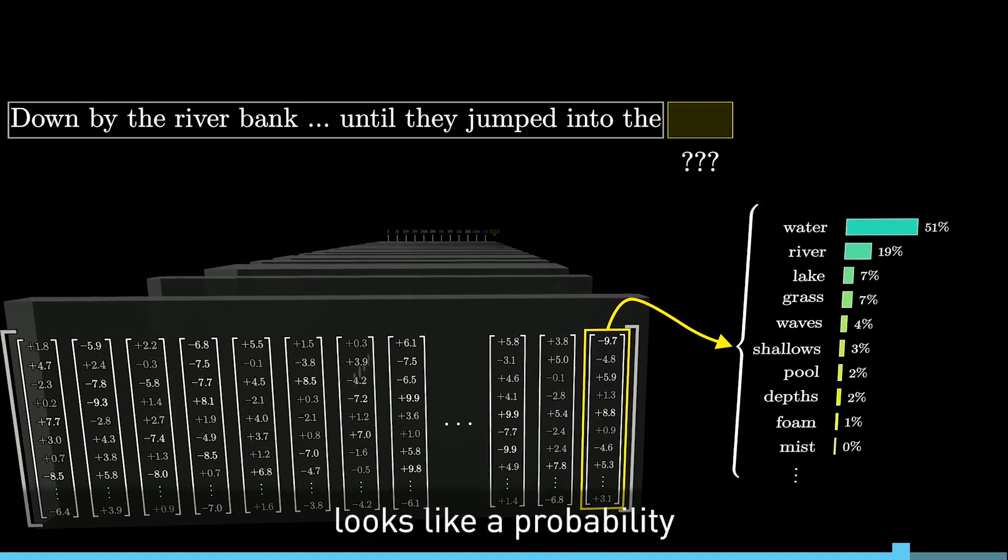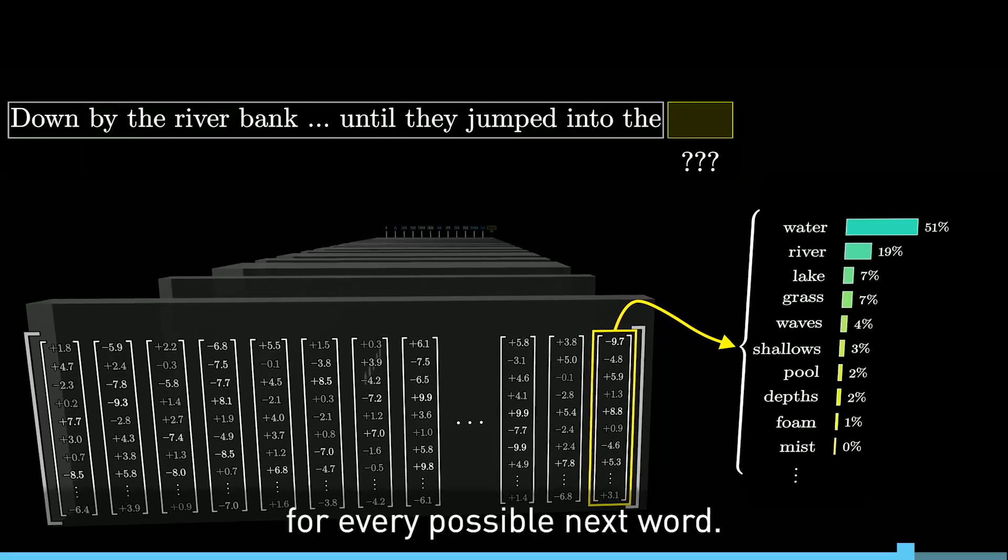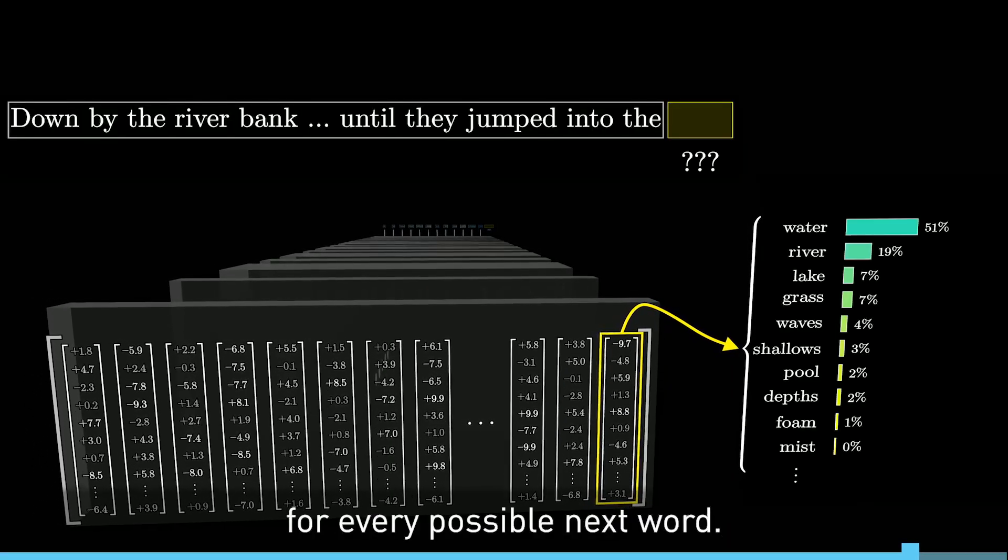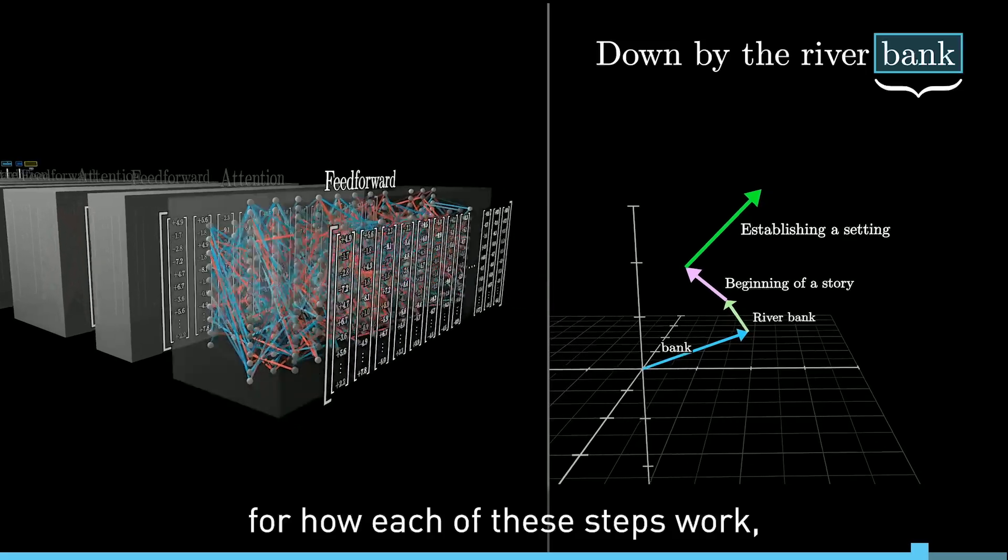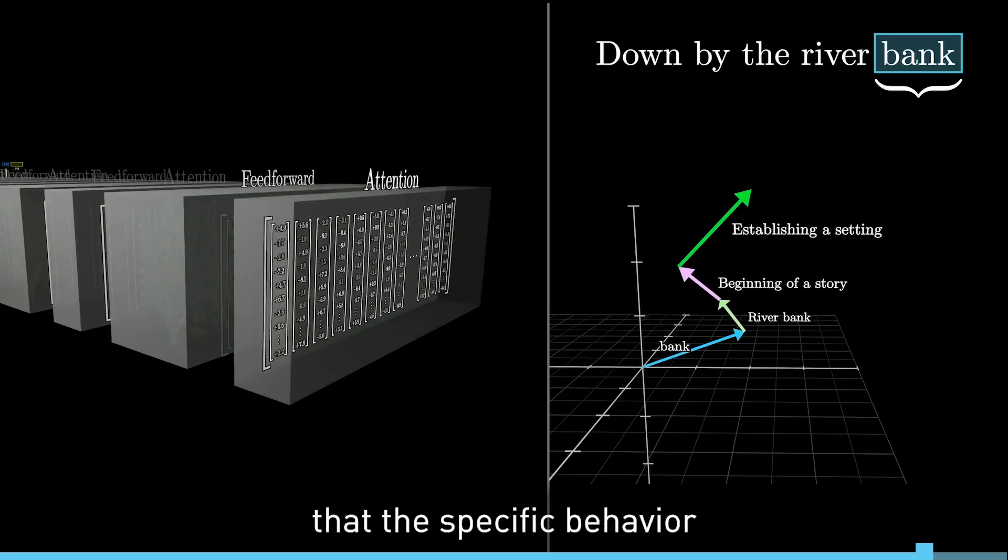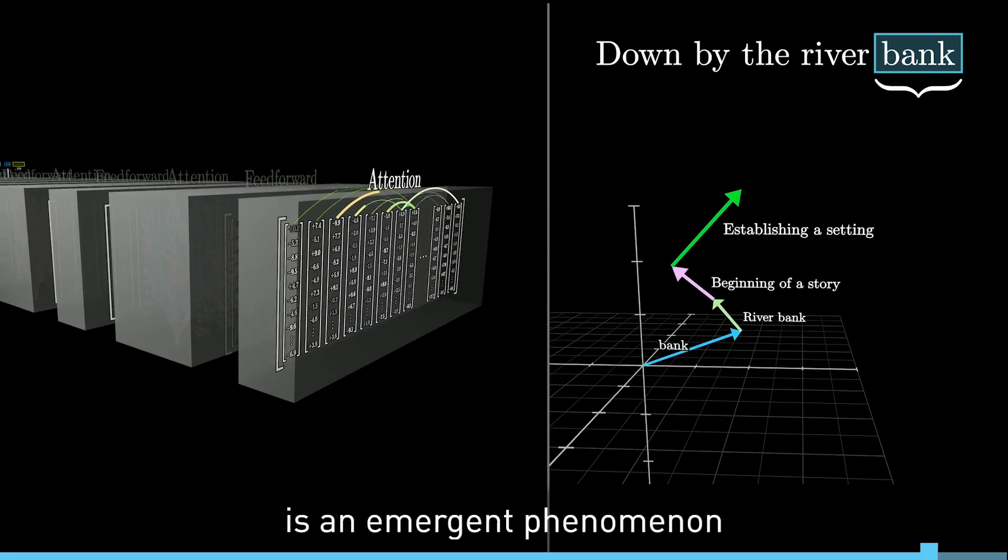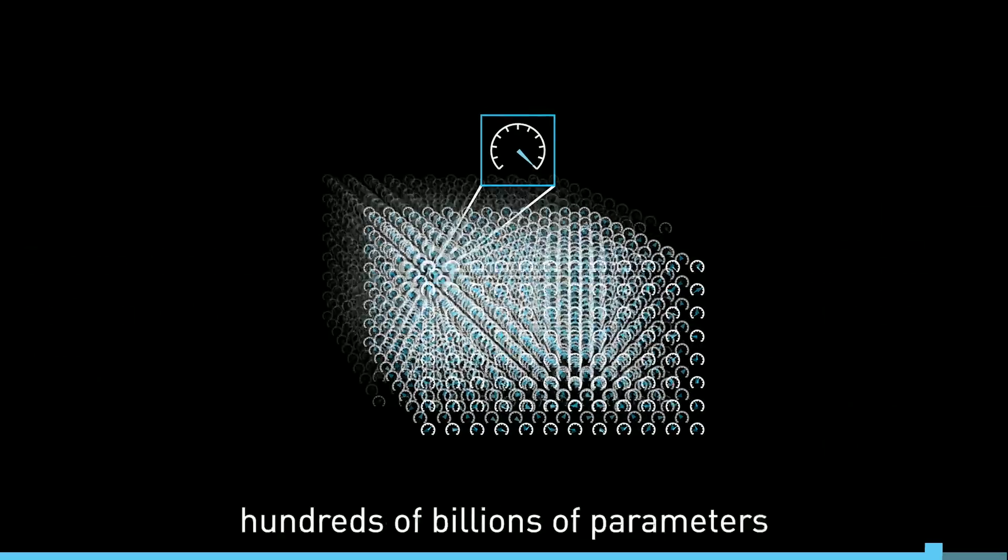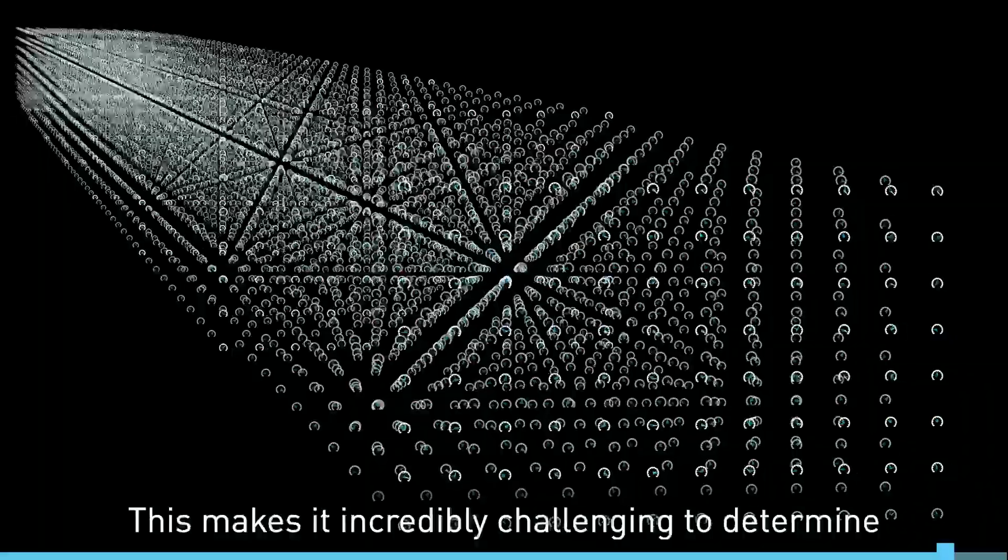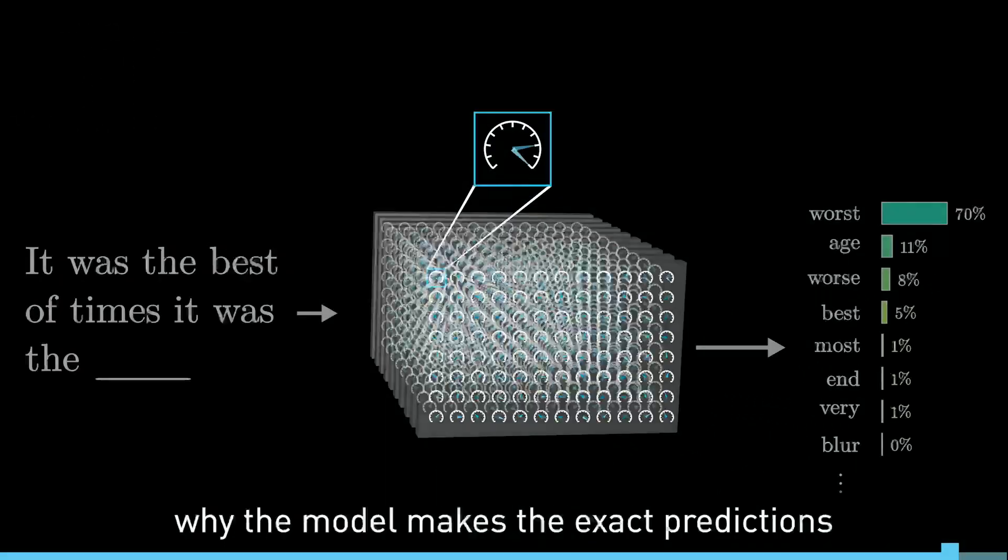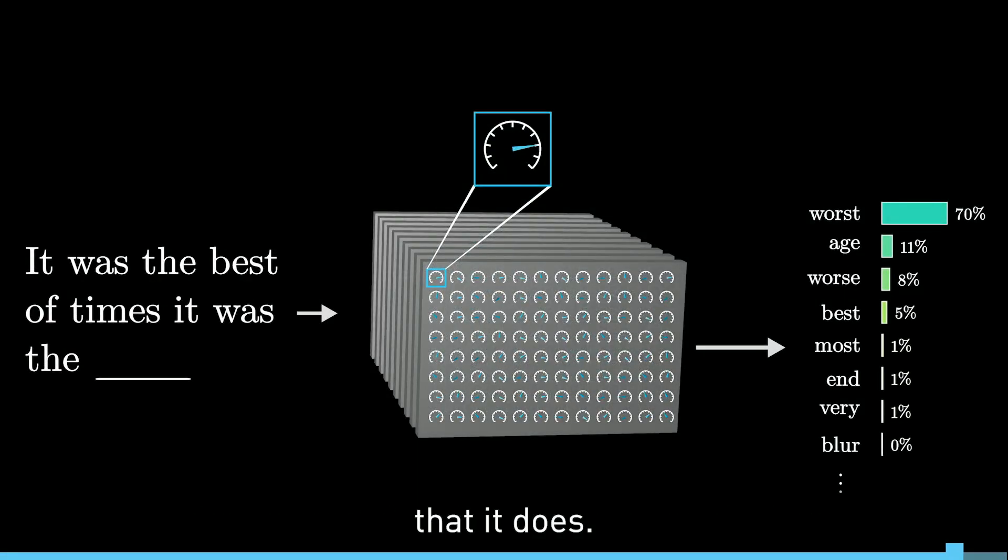Again, the model's prediction looks like a probability for every possible next word. Although researchers design the framework for how each of these steps work, it's important to understand that the specific behavior is an emergent phenomenon based on how those hundreds of billions of parameters are tuned during training. This makes it incredibly challenging to determine why the model makes the exact predictions that it does.